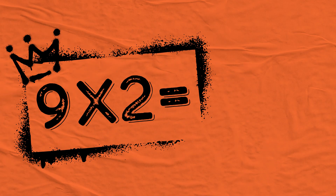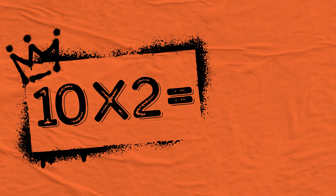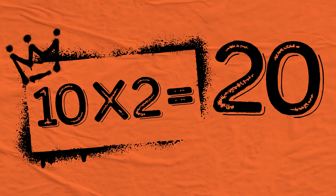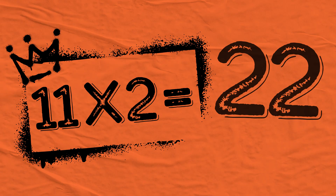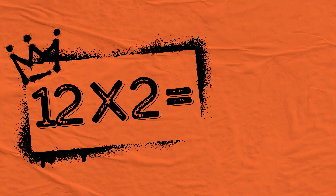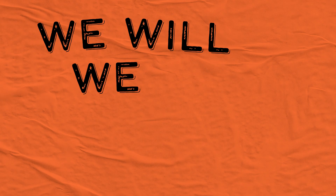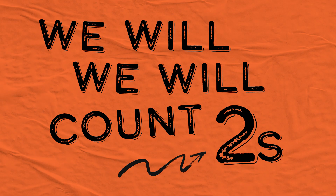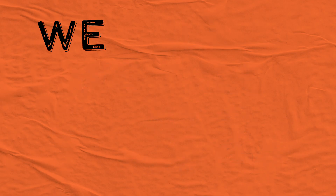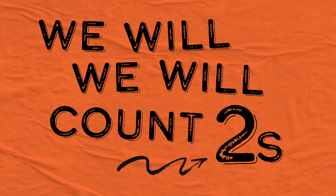9 multiplied by 2 is 18, and 10 multiplied by 2 is 20, 11 multiplied by 2 is 22, and 12 multiplied by 2 is 24. We will, we will count 2. We will, we will count 2.